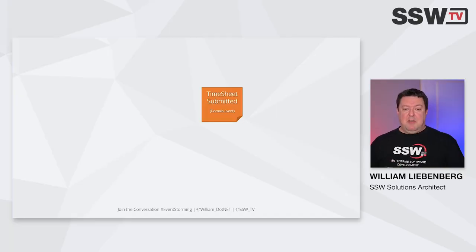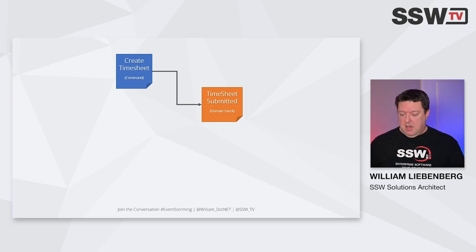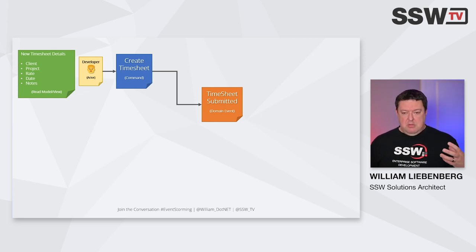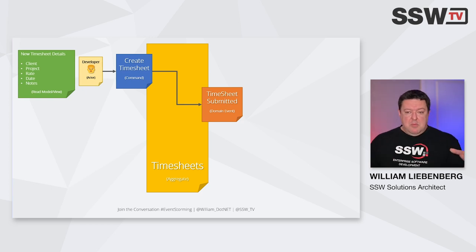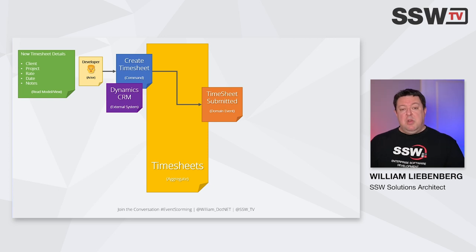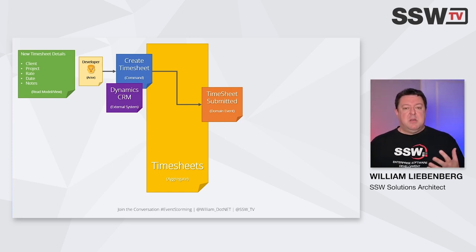As an example: we have an event called 'timesheet created,' triggered by the command 'create timesheet,' done by a developer. The developer needed to know the client they worked for, the project, the billing rate, the date, and some notes — all important pieces of information to create the timesheet. We can group these into the timesheets aggregate. We also identified that we need to talk to the CRM to double-check the billing rate, because maybe a discount applies that the developer may not have been aware of, and apply that to the timesheet creation.